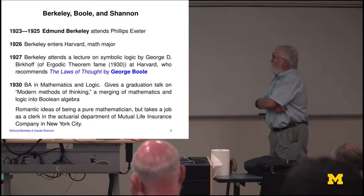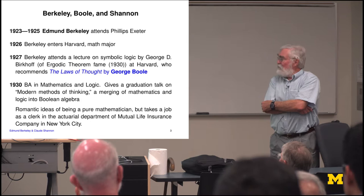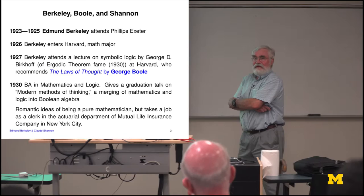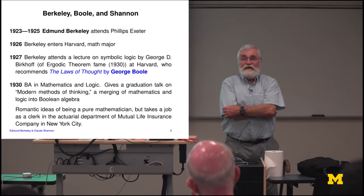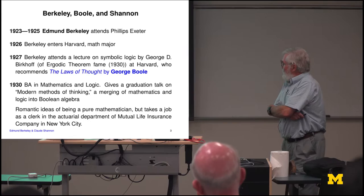He got his bachelor's in 1930 and gave a graduation talk on modern methods of thinking, basically giving all of his enthusiastic predictions about how important this stuff would be if only everybody learned it. He wanted to be a pure mathematician — that was the life that seemed perfect to him — but it was 1930. His parents warned him they were in the Great Depression; he better get a job. So he went to work in the actuarial department of an insurance company and moved to New York City.